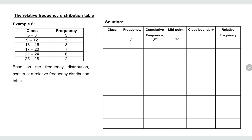Example 6: You are given a table showing class and frequency. The classes and their frequencies are: 5–8 with frequency 3, 9–12 with frequency 5, 13–16 with frequency 8, 17–20 with frequency 7, 21–24 with frequency 6, and 25–28 with frequency 2. Based on this frequency distribution, construct a relative frequency distributions table.